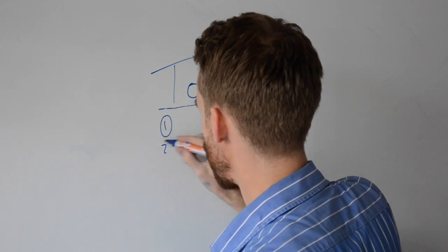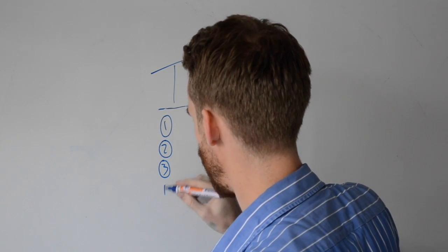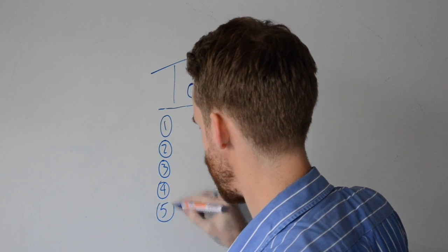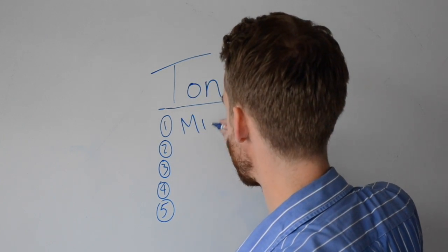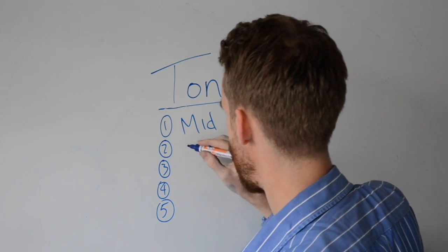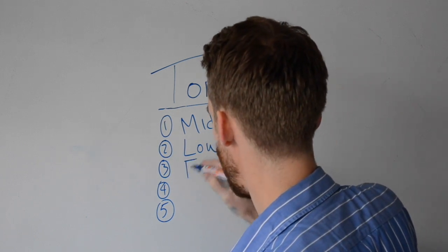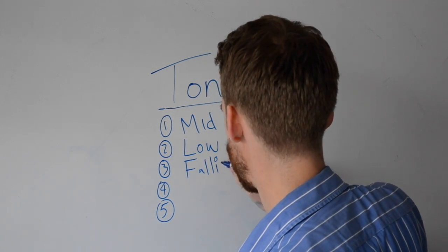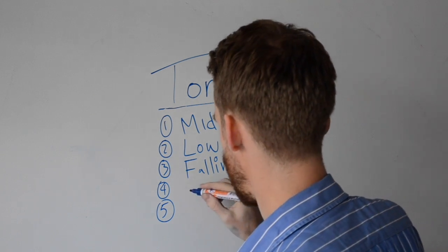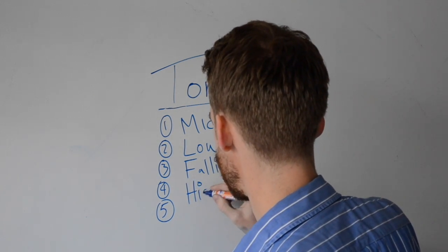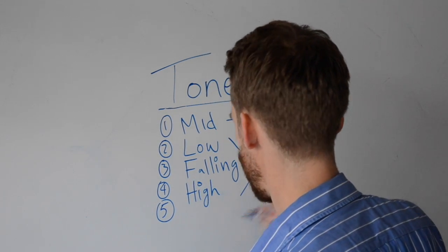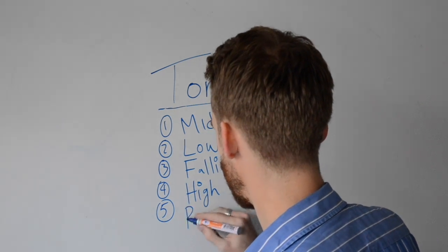Now just to review quickly, the five tones in Thai. So we have a mid tone, a low tone, falling tone, a high tone, and a rising tone.